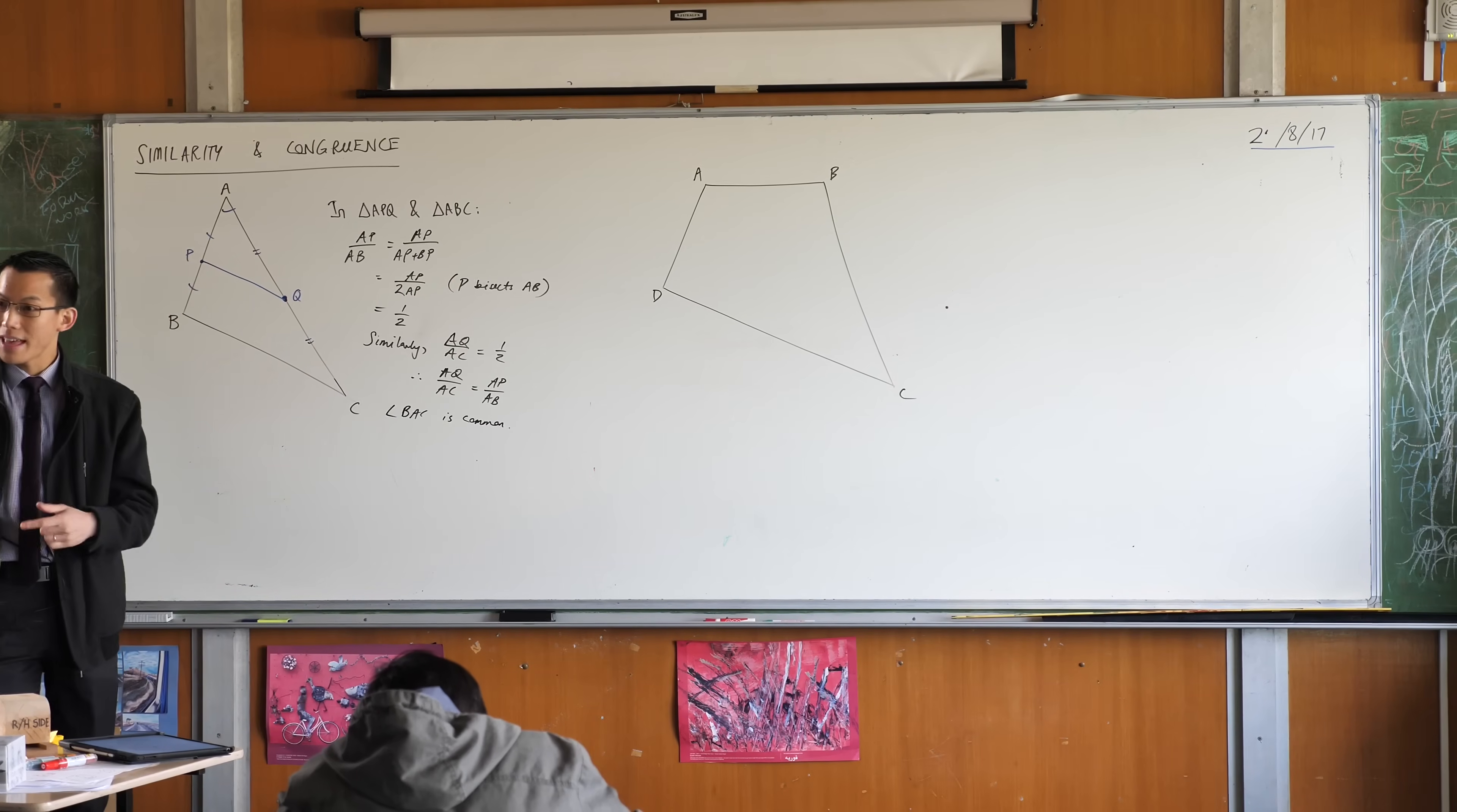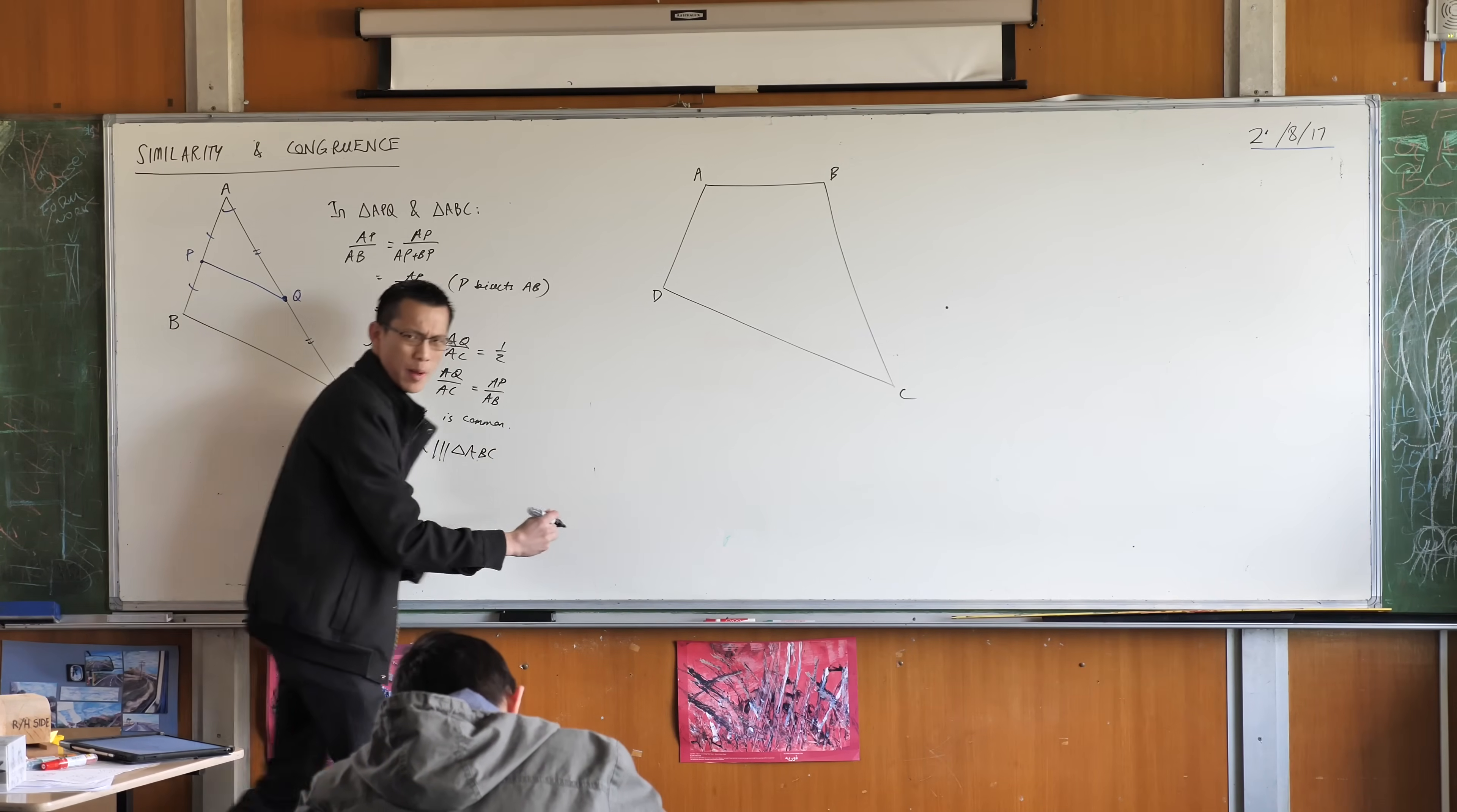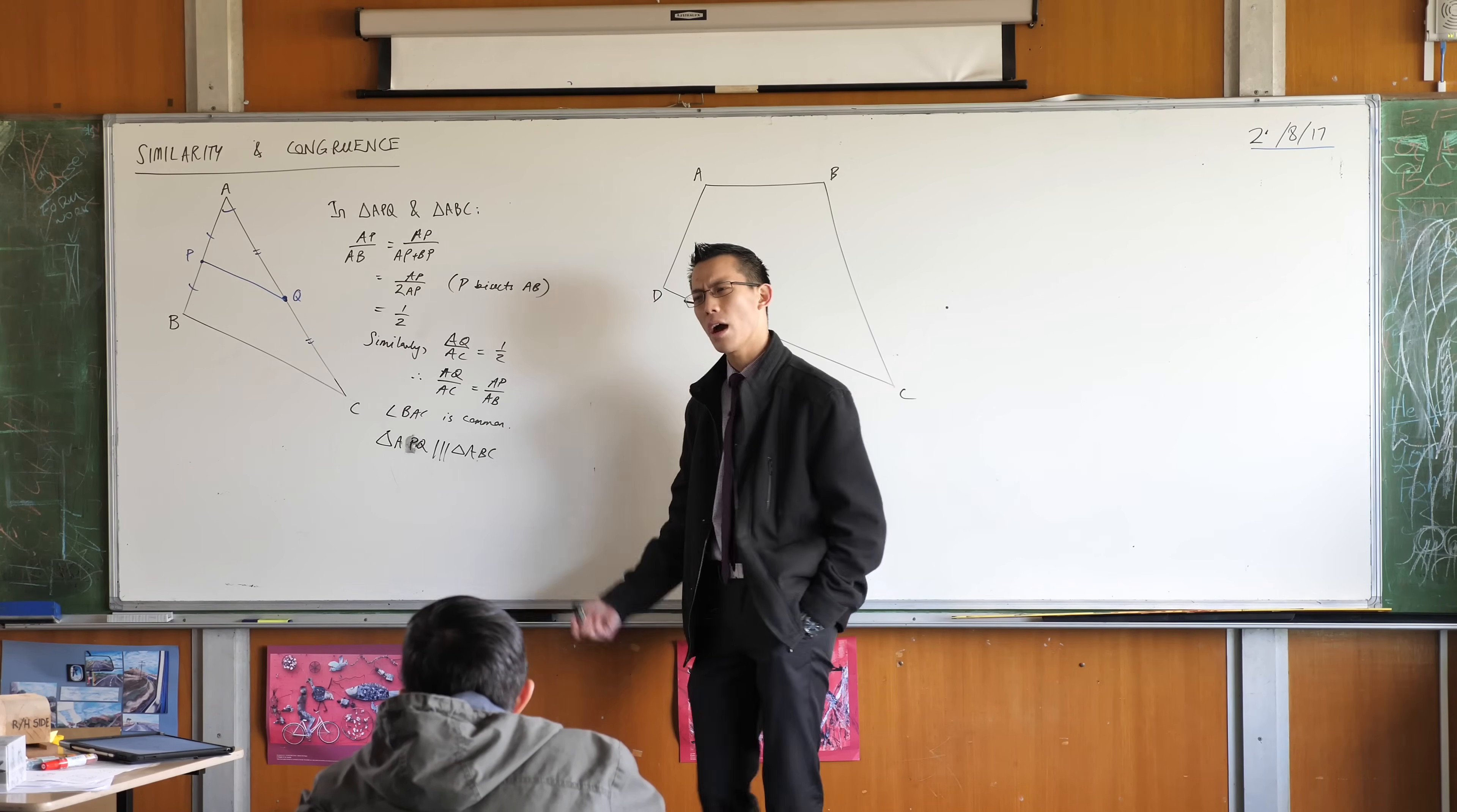Okay, so what that means is that now I can state that these two are similar. A, P, oops, two A's is not helpful. Now what's my reason by the way? What's a nice succinct way to say this? It's not that all the sides that correspond are in the same proportion, because I don't actually know that. I only know two pairs. I've got two pairs and I've got an angle, so how would you word that?